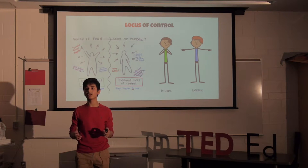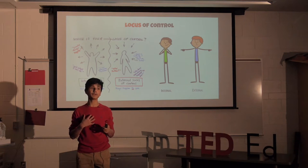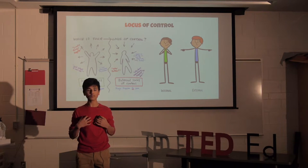To understand those results, we first need to understand what is our locus of control. Your locus of control is your beliefs based on whether things happen to you or you cause actions to happen.